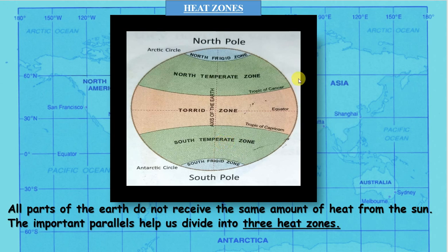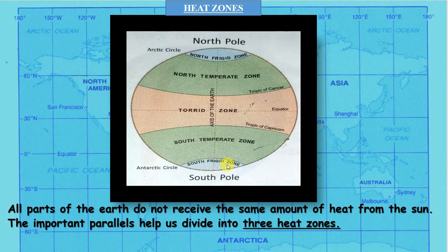The third zone is the frigid zone. Beyond the arctic circle and beyond the antarctic circle it is very cold, as these areas receive extremely slanting rays of the sun. The frigid zone lies from the arctic circle to the north pole, and from the antarctic circle to the south pole. This zone remains covered with ice and snow for most of the year and is the coldest zone of the earth.